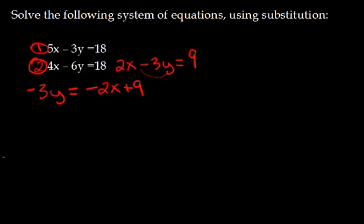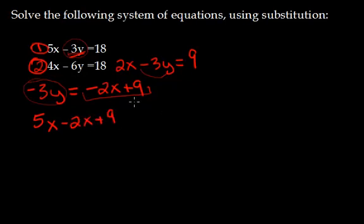Okay. So now what I'm going to do is I'm going to substitute this. Notice, see, we have here. Okay? Instead of writing the 3y right here, what I'm going to do is I'm going to write in that whole piece there. So that's going to give me 5x minus 2x plus 9, and that is equal to 18.